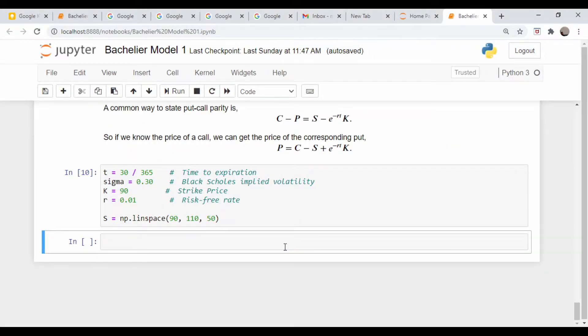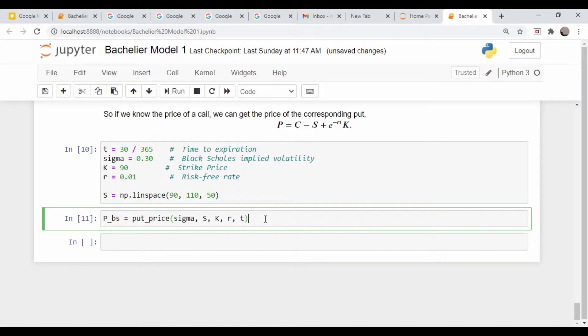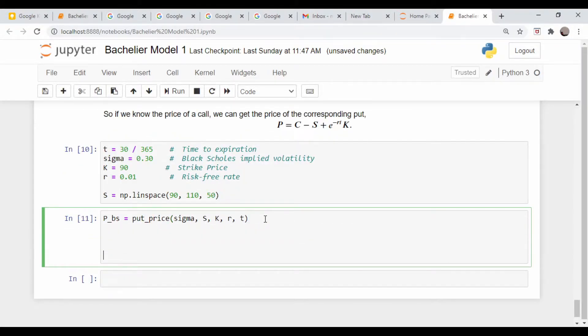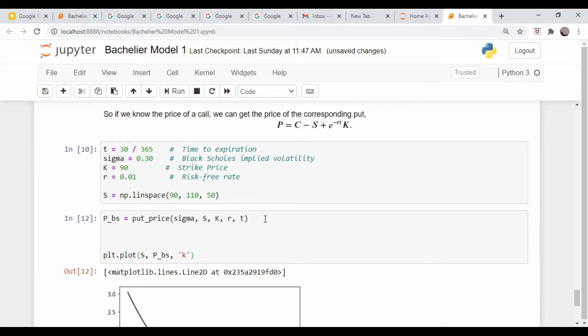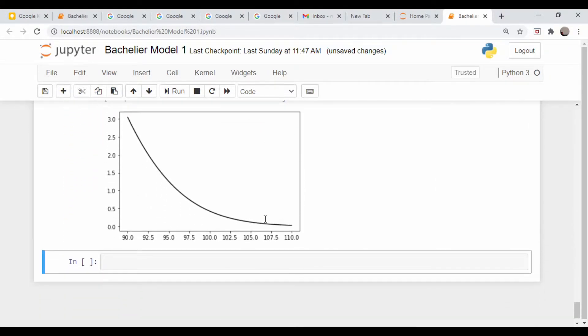Since we already have our put function for Black-Scholes defined above, let's just make use of that. Put underscore BS equals put price sigma SKRT. And let's plot that. PLT dot plot, S comma put underscore Black-Scholes, and we'll do a black line.